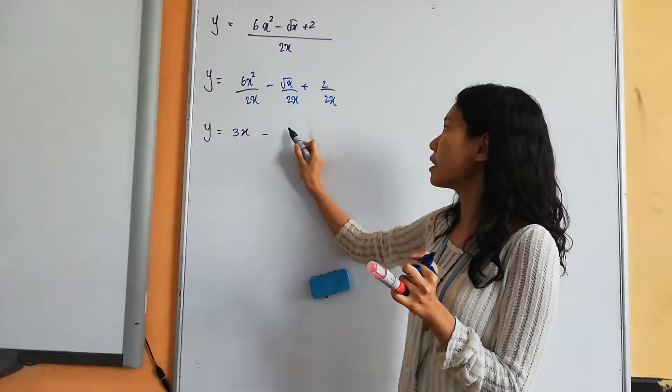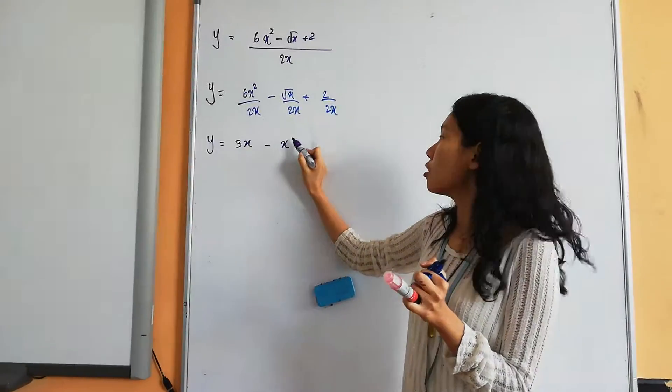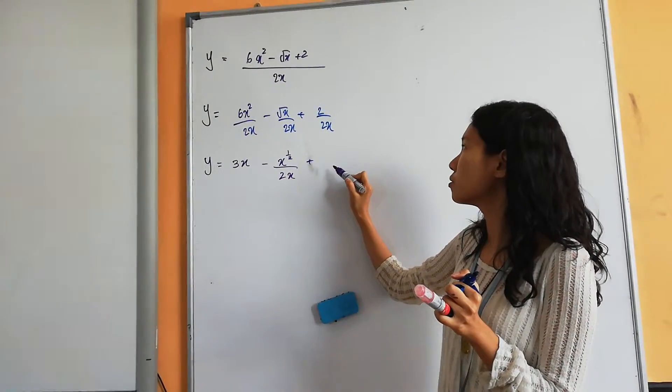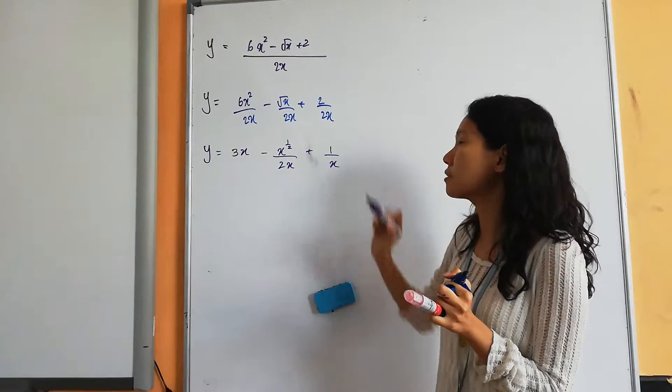Now, this one is x to the power of? 1 over 2. Half, correct, divided by 2x. This one, 2 divided by 2? 1. Everybody okay? Yes.